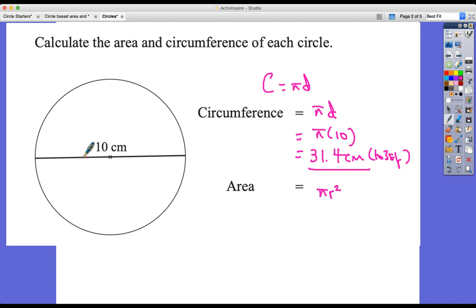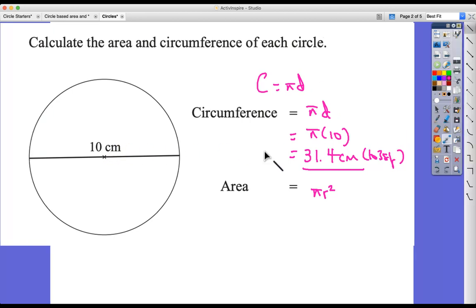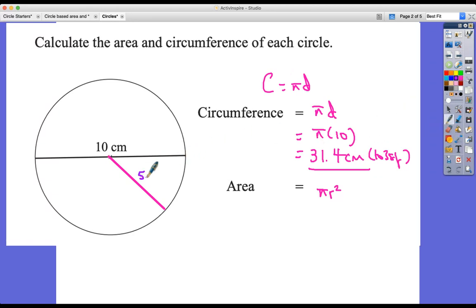The area is equal to πr². In this question we know diameter only, but the radius is half the diameter. So if the diameter is 10, then the radius equals 5. This is going to be π times 5 squared, which is 25π, which equals 78.5 centimeters squared. It's area, so centimeters squared.